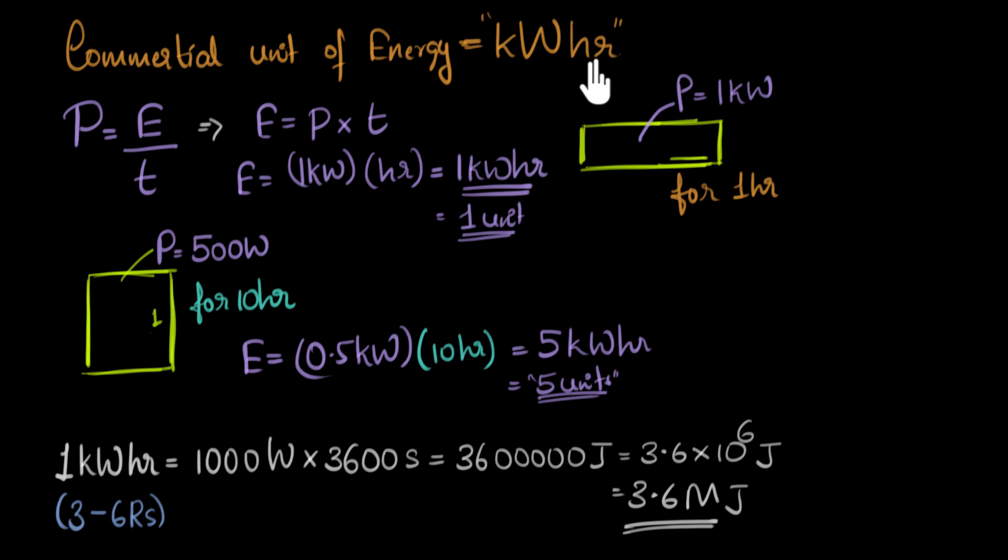So to summarize, a kilowatt hour is the commercial unit of energy. Usually we just call it as units. And to calculate energy in kilowatt hour, or in units, we need to make sure that the power is in kilowatts and the time is always in hours. And one kilowatt hour is 3.6 million joules. And one small note is, whenever I would hear this word kilowatt hour, I would immediately think it's the unit of power. But it's not the unit of power. Remember, kilowatt is the unit of power, but over here we are multiplying the kilowatt with time. And when you multiply with time, it becomes unit of energy. So kilowatt hour is not the unit of power. So please don't make the same classic mistake that I would do.